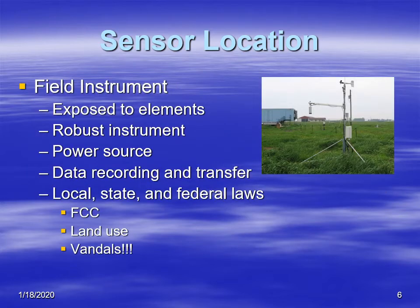A field instrument is one that is out in the field, meaning it's out in the elements — 24 hours a day, seven days a week. It's exposed to rain, hail, lightning, radiation from the sun, and all sorts of conditions. So the instrument needs to be really rugged and designed to withstand all of those elements.